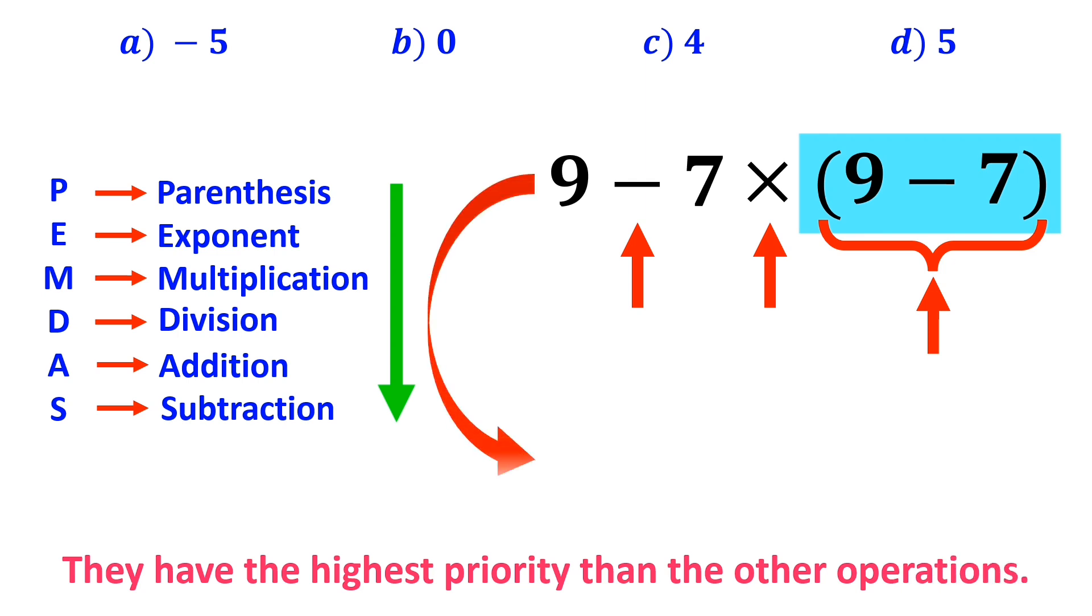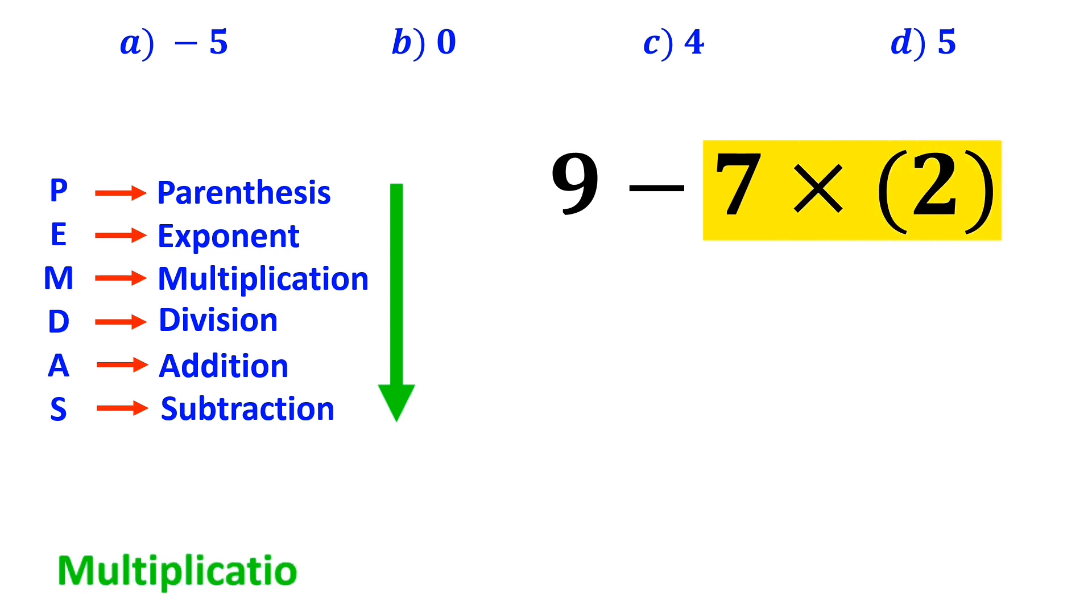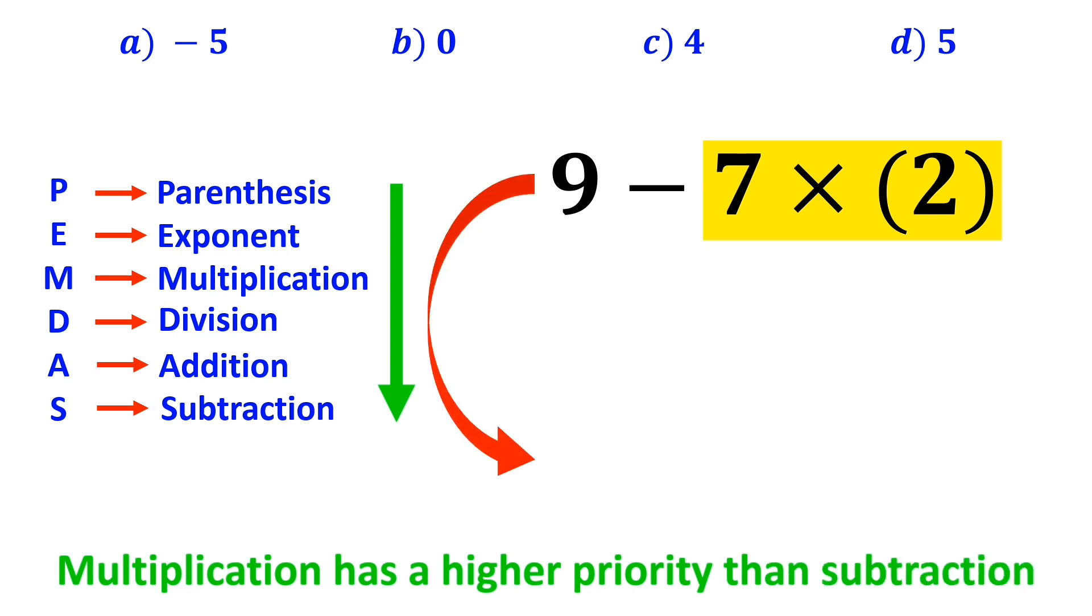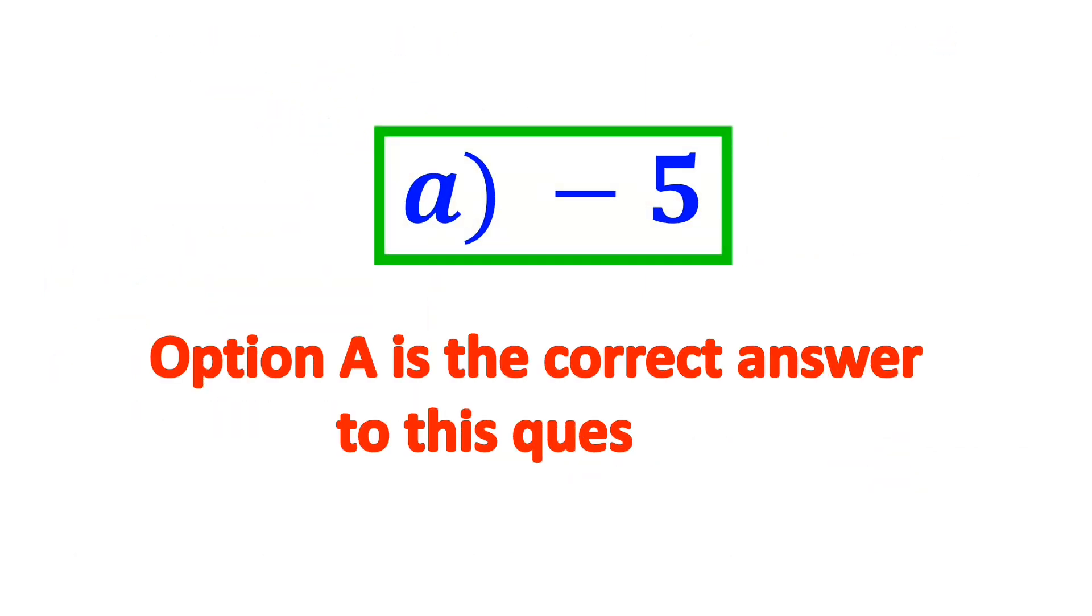So, we can rewrite this expression as 9 - 7 × 2. In the next step, we move on to the multiplication, because multiplication has a higher priority than subtraction. So, we rewrite this expression as 9 - 14. Finally, the value of this expression is equal to -5. Therefore, option A is the correct answer to this question.